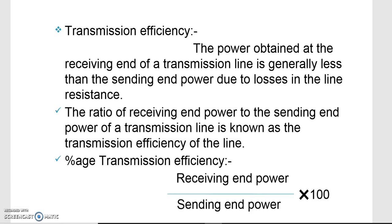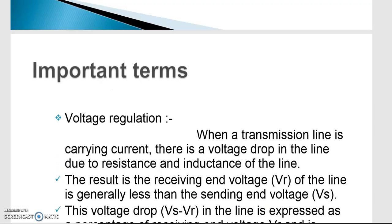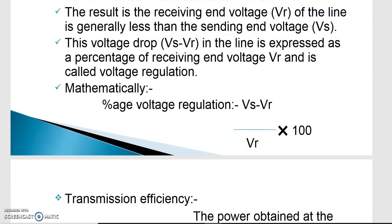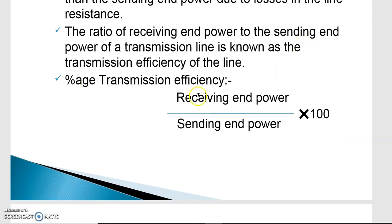Next is transmission efficiency. The power obtained at the receiving end is generally less than the sending end power due to losses in the line resistance. The ratio of receiving end power to sending end power is known as transmission efficiency. Percentage transmission efficiency = (Receiving end power / Sending end power) × 100. So the two key formulas are: Voltage Regulation = (Vs − Vr) / Vr × 100, and Transmission Efficiency = (Receiving end power / Sending end power) × 100.